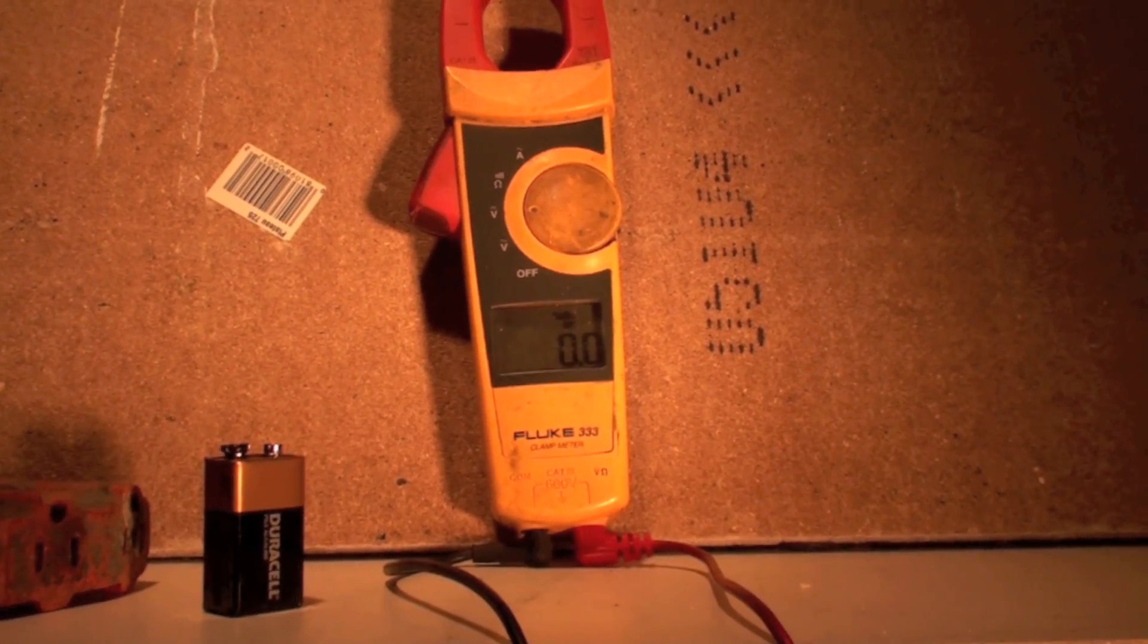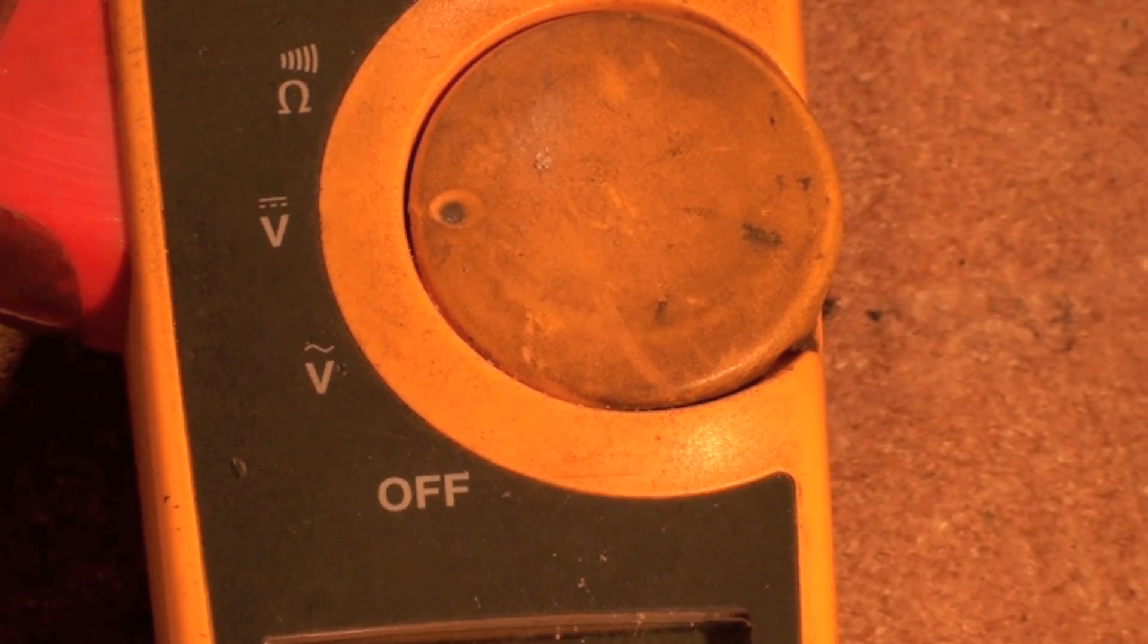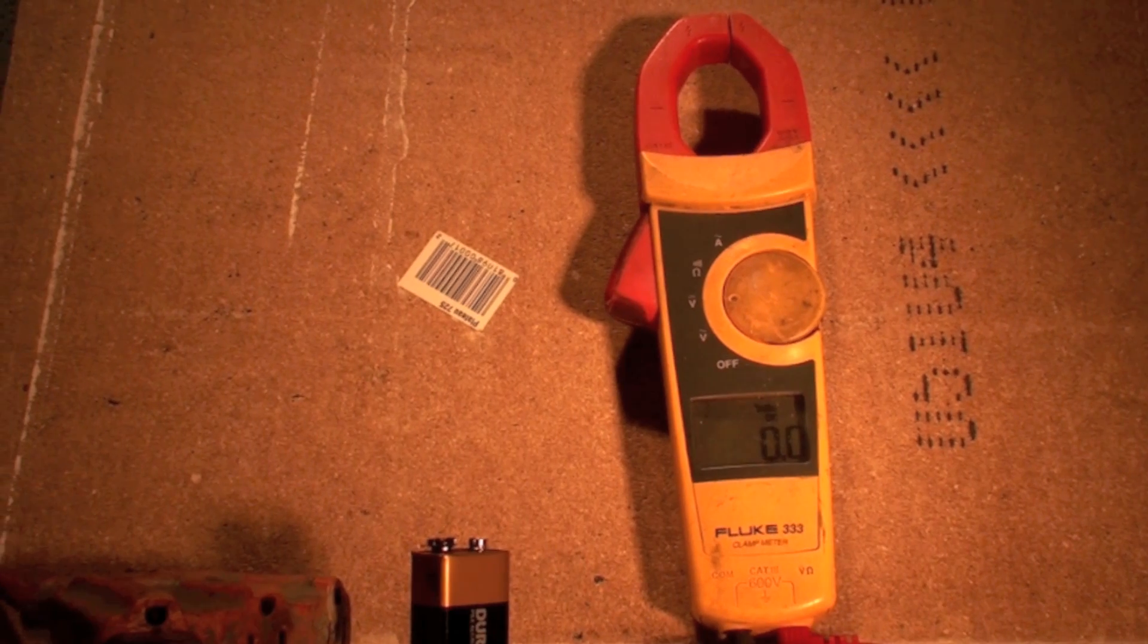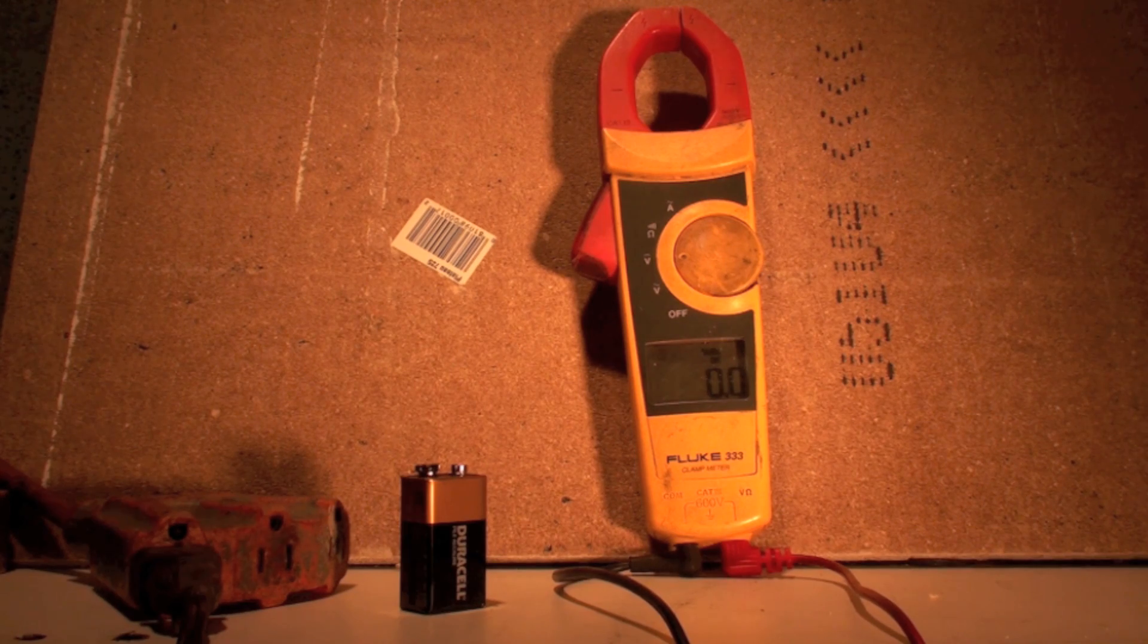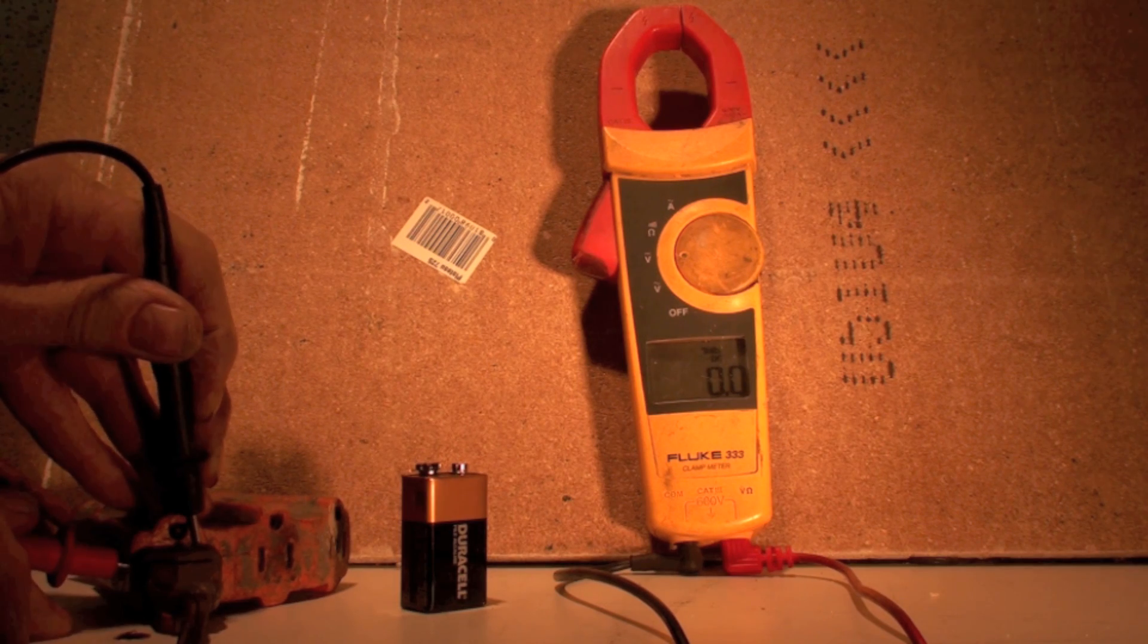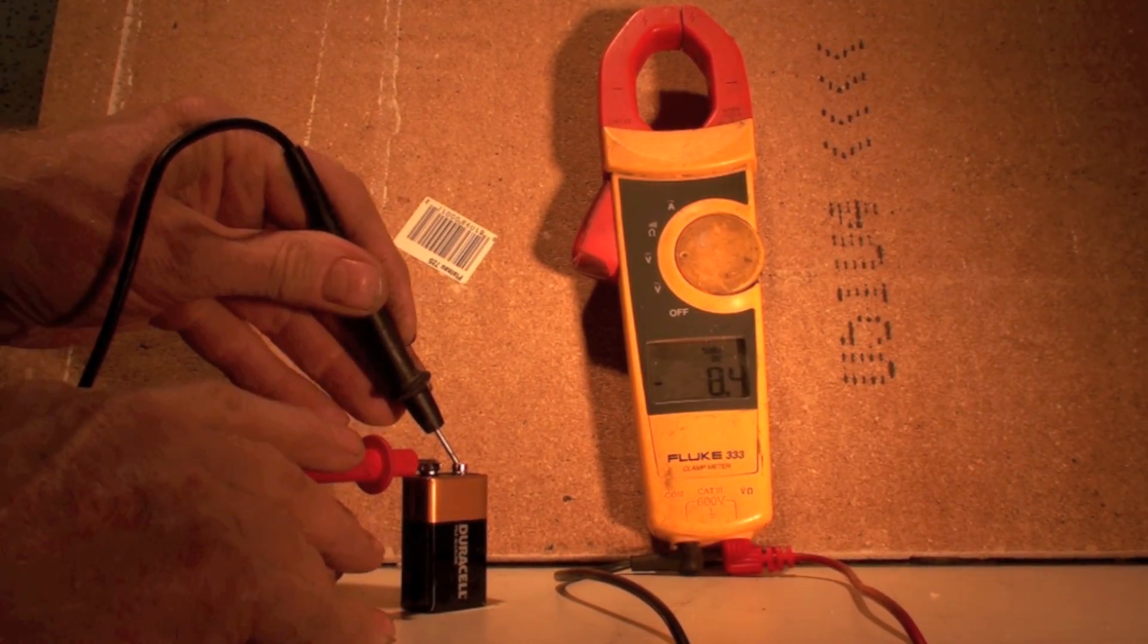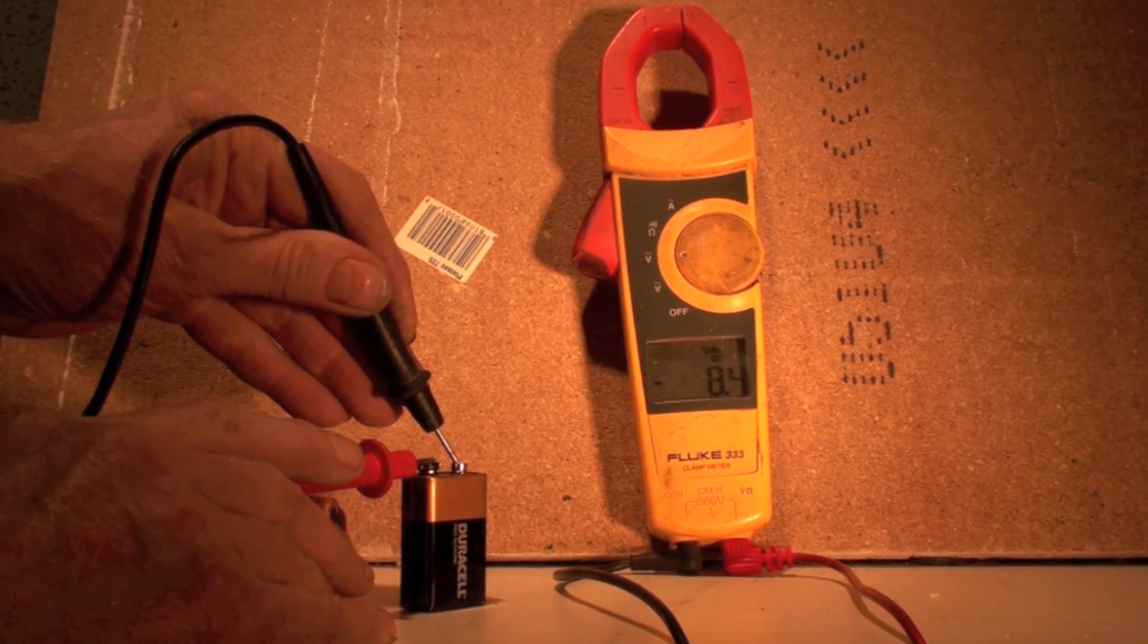Again, I'm going to get you close so you can see that. That's got the straight line with the dotted line underneath. So now if I go to DC volts and I put it across here, it's not going to read anything because it's in the wrong position. But if I put it on here, it's going to give me 8.4 volts, and that's a nine-volt battery.